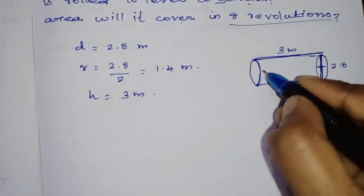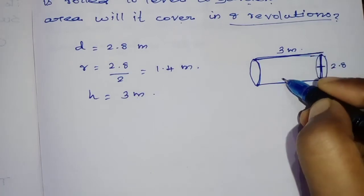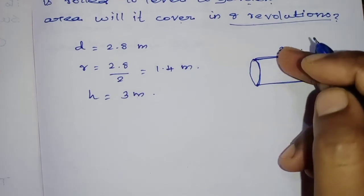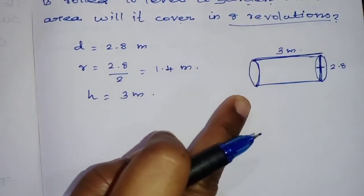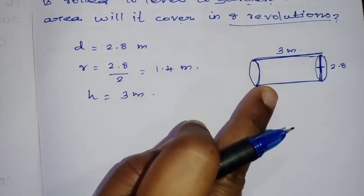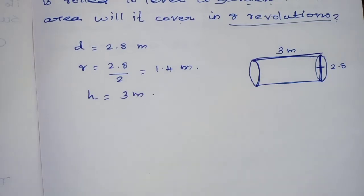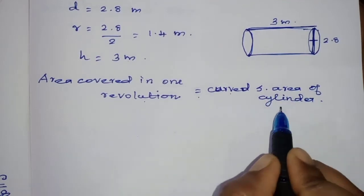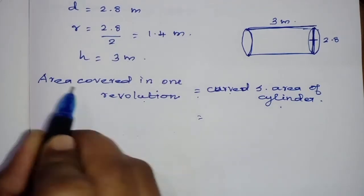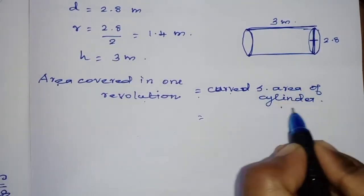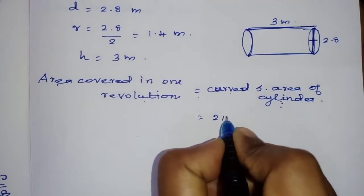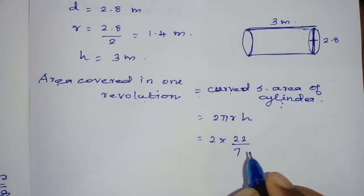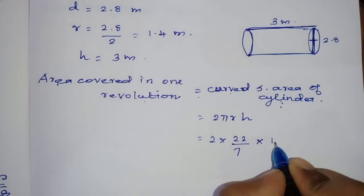Area covered in 1 revolution is equal to the curved surface area of this cylinder. Curved surface area equals 2πrh, so 2 into 22/7 — pi value 22 by 7 — radius 1.4, height 3.